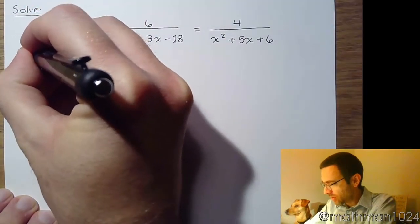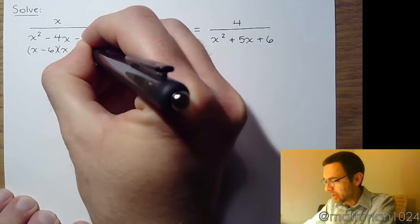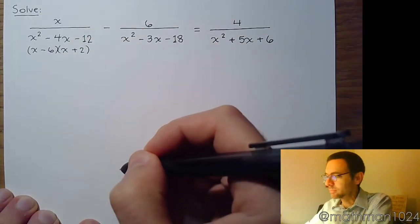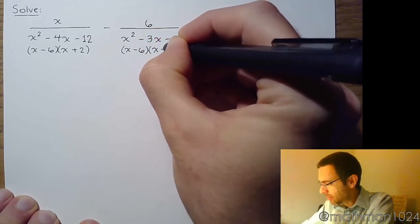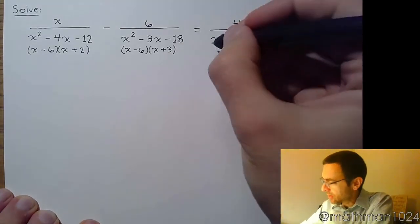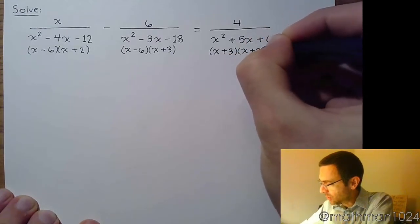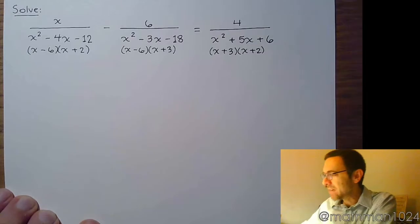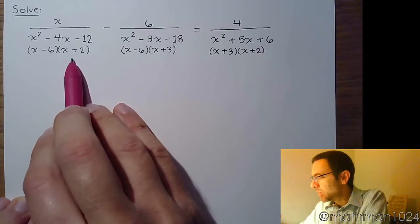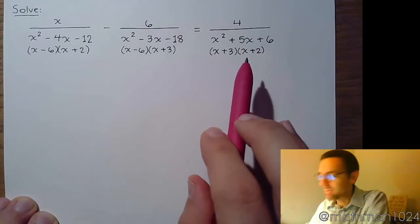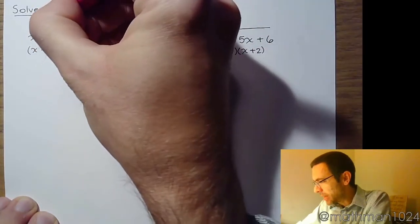This first fraction factors as x minus 6 times x plus 2. The next one factors as x minus 6 times x plus 3. And the last denominator will factor as x plus 3 times x plus 2. Our job is to put in the missing factors so that everybody has the exact same set of factors. If you look at this first denominator, there is a factor that the other guys have that he doesn't have, and that's the x plus 3.